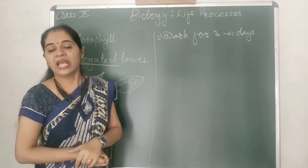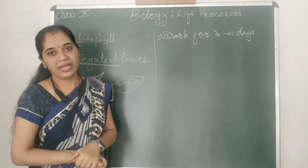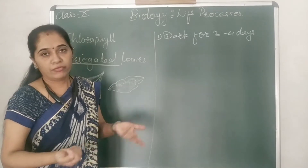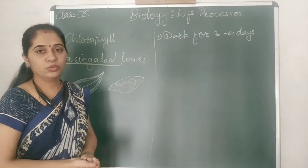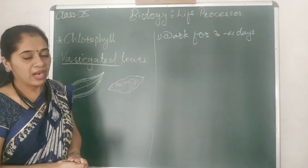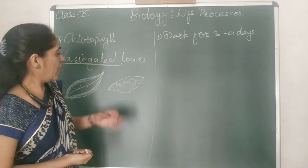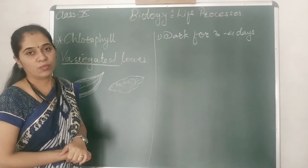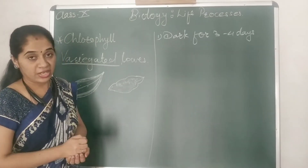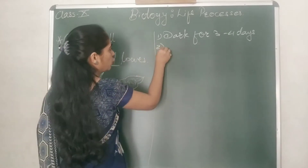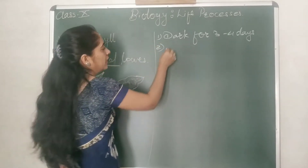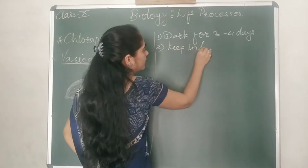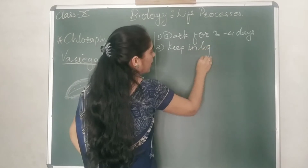Because in the absence of sunlight the plant is not able to prepare its food, so it will utilize the stored food material in the form of starch. Then the second stage: keep it in light, as usual.